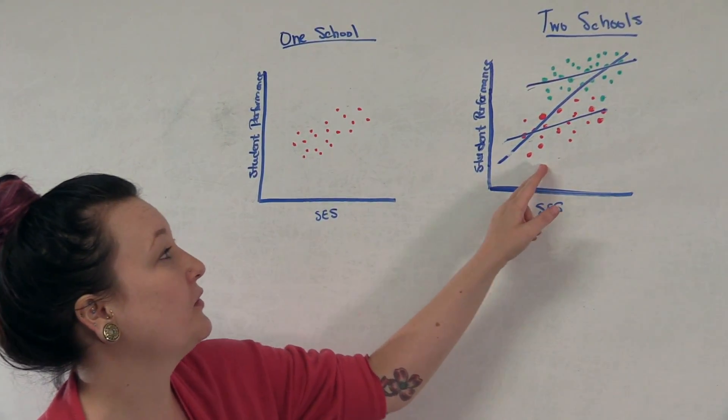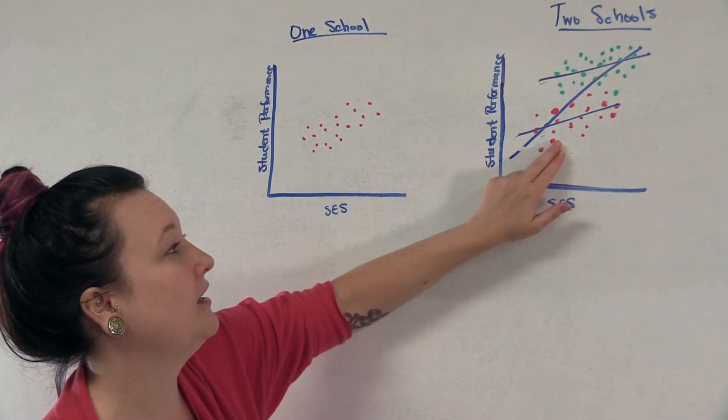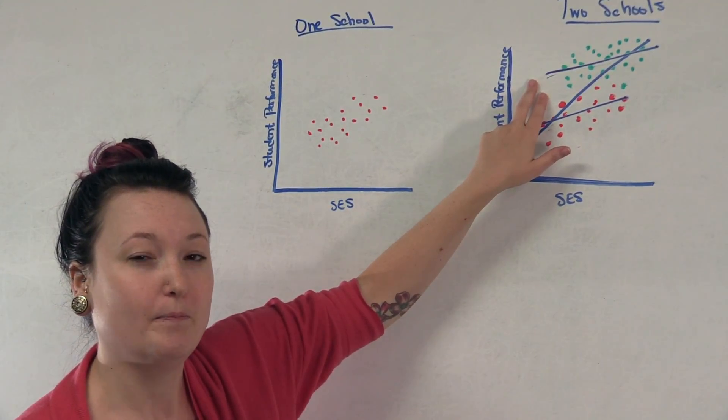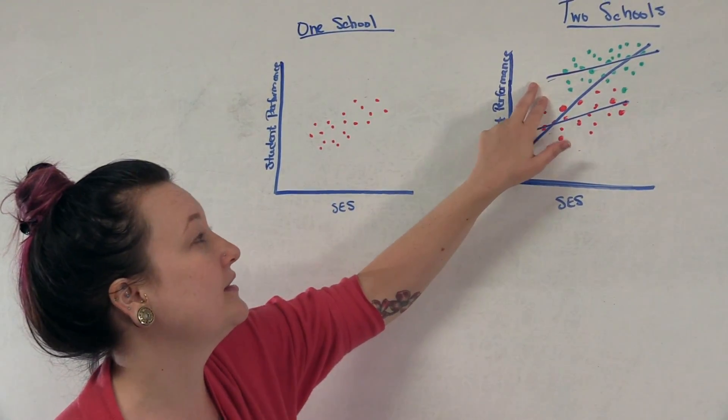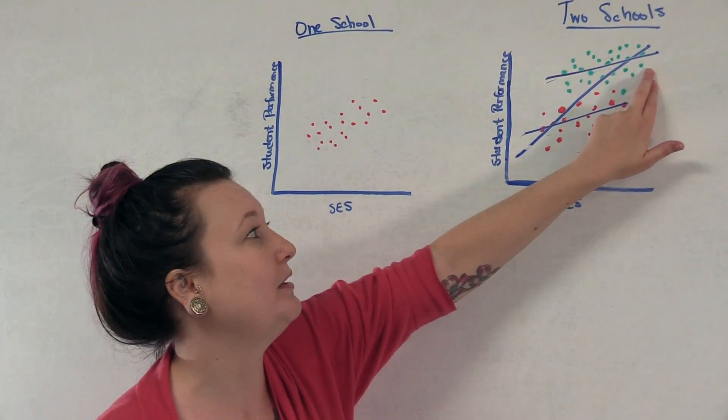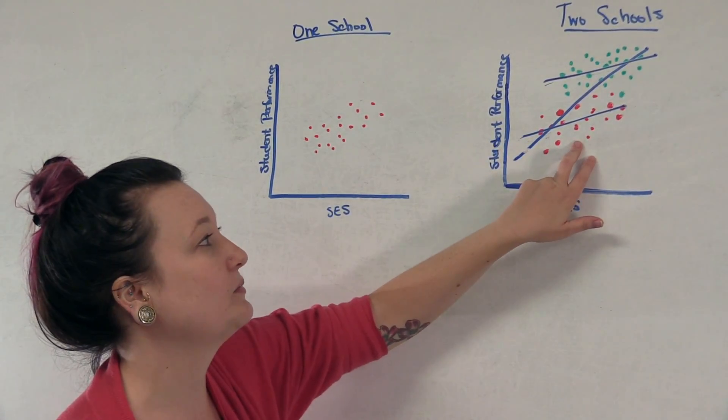For example, we may think that the reason that student performance in this green school is higher than in this red school is that it has a higher level of funding. This would be a level two variable, since all of the individuals in this school are going to have the same value on school spending, and all of these individuals in this school are going to have the same value on school spending as well.